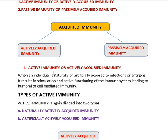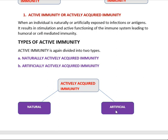When you are exposed to chickenpox, measles, or mumps naturally — without any vaccine or medicines — and it gets cured, the reoccurrence of that disease won't happen during your lifetime. The reason is your cell-mediated immunity and humoral-mediated immunity. So when an individual is naturally or artificially exposed to infections or antigens, it results in stimulation and active functioning of the immune system, leading to humoral or cell-mediated immunity.